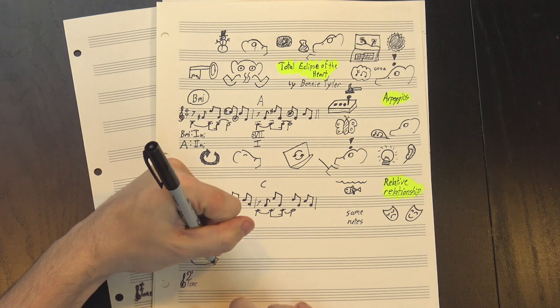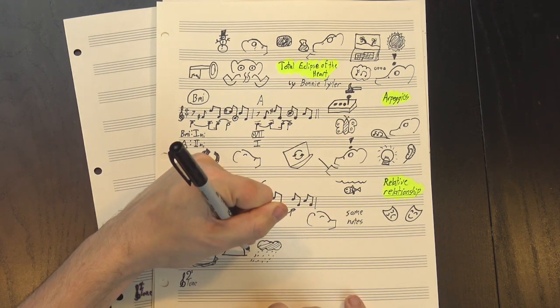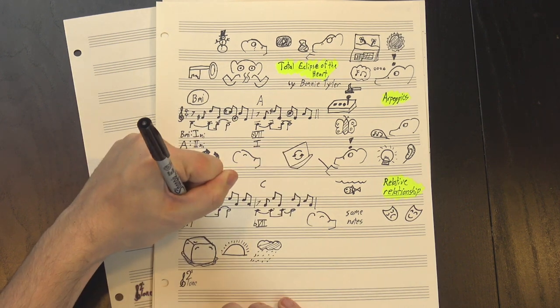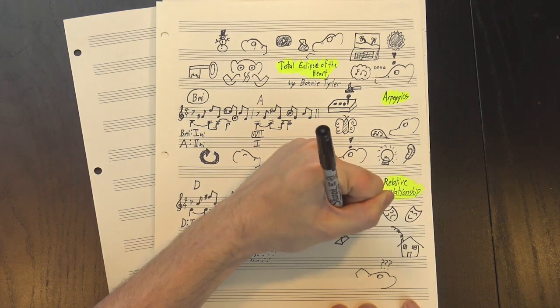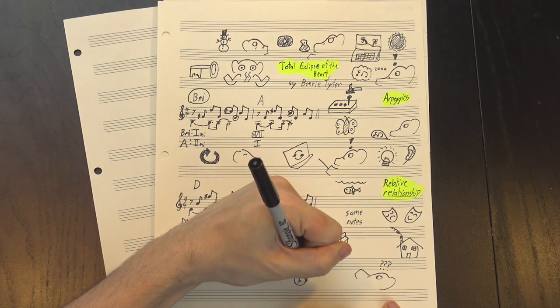the keys of B minor and D major have what's called a relative relationship, which means they contain all the same notes, they just use them differently. This makes changing between them really smooth, and I think that's what's happening here. We've left the darker, sadder minor for a slightly more uplifting section in a major key. The C major, then, is the b7 chord, which gives us the same 1 to b7 structure we saw in the first half. It's a little bit weirder here, because major isn't supposed to have a b7 chord,